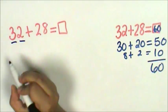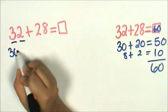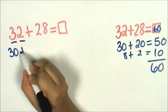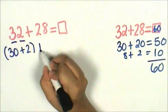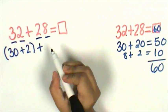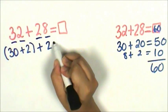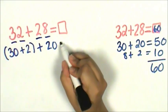Thirty-two is composed of three tens, that's thirty, and two ones. Twenty-eight is composed of two tens, that's twenty, and eight ones.